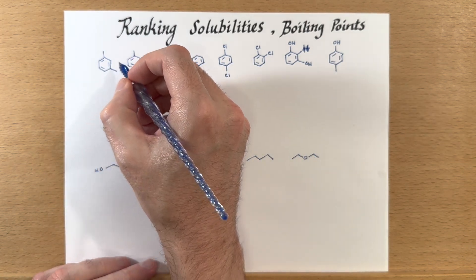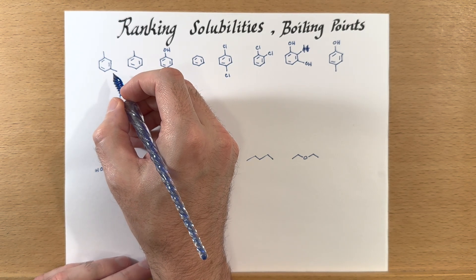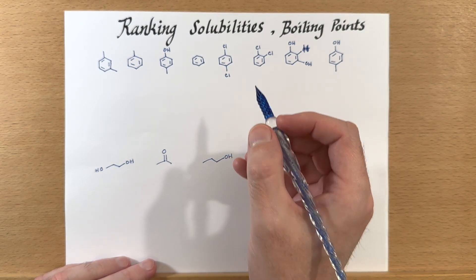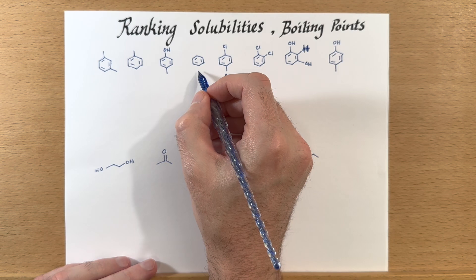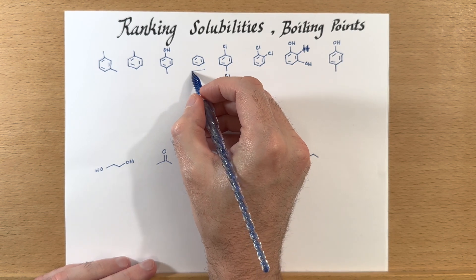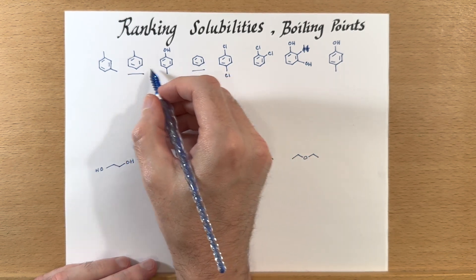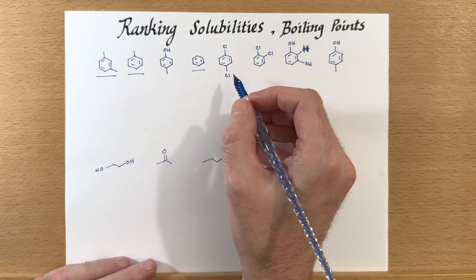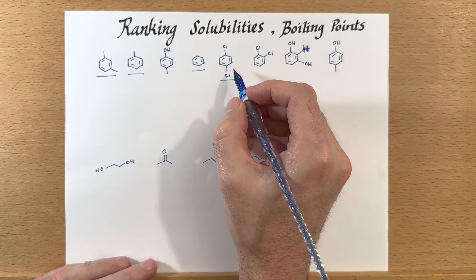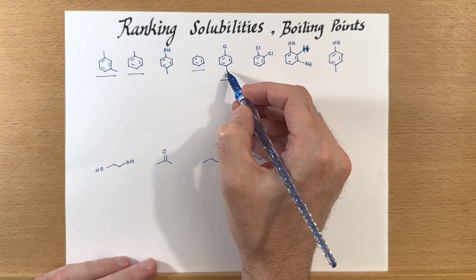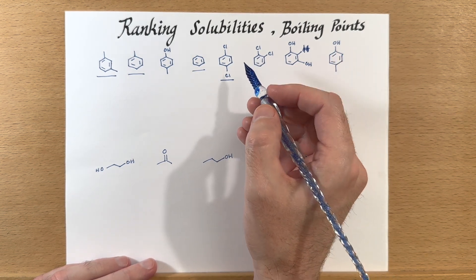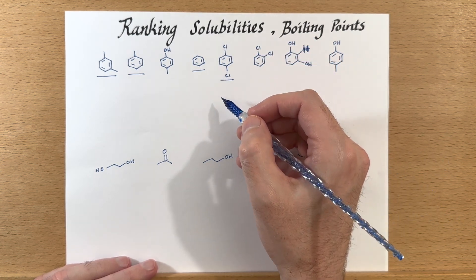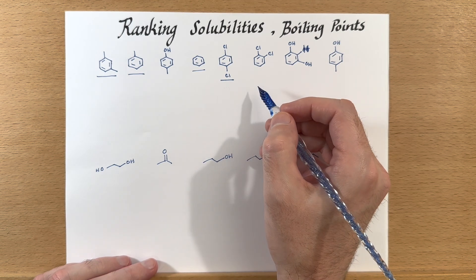I'll underline the ones that just have the induced dipole-induced dipole forces — that's going to be benzene, toluene, this disubstituted benzene, and also this dichloride, because it's in the 1,4 position and therefore it is not polar. There's no dipole; it's a symmetrical molecule.